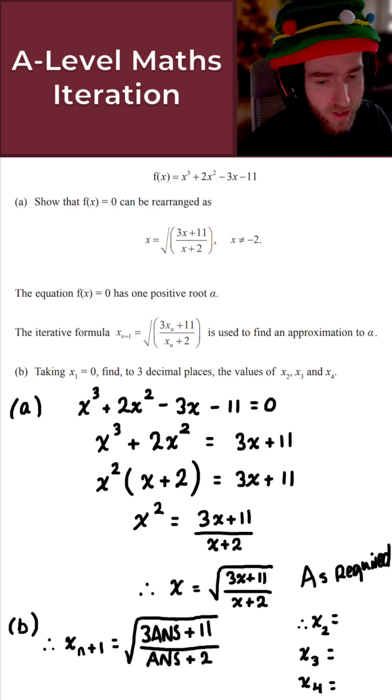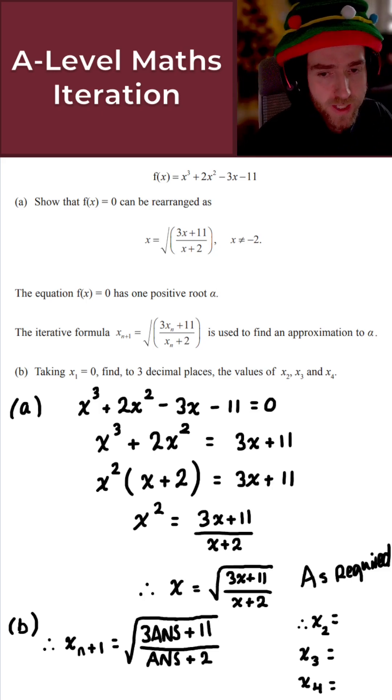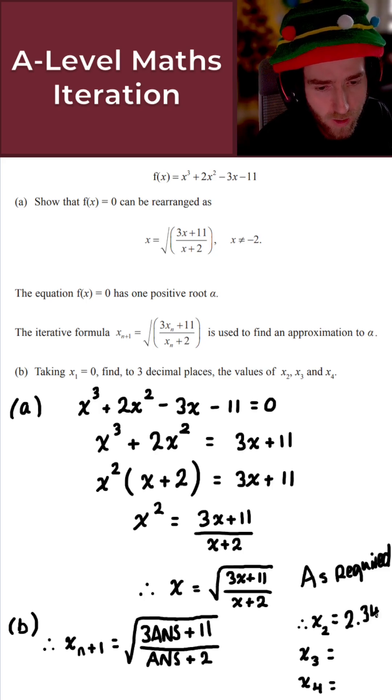So press Enter once you've got all of that, and that's going to give us x2. So if you've done this correctly to three decimal places, what we get for x2 is 2.345.